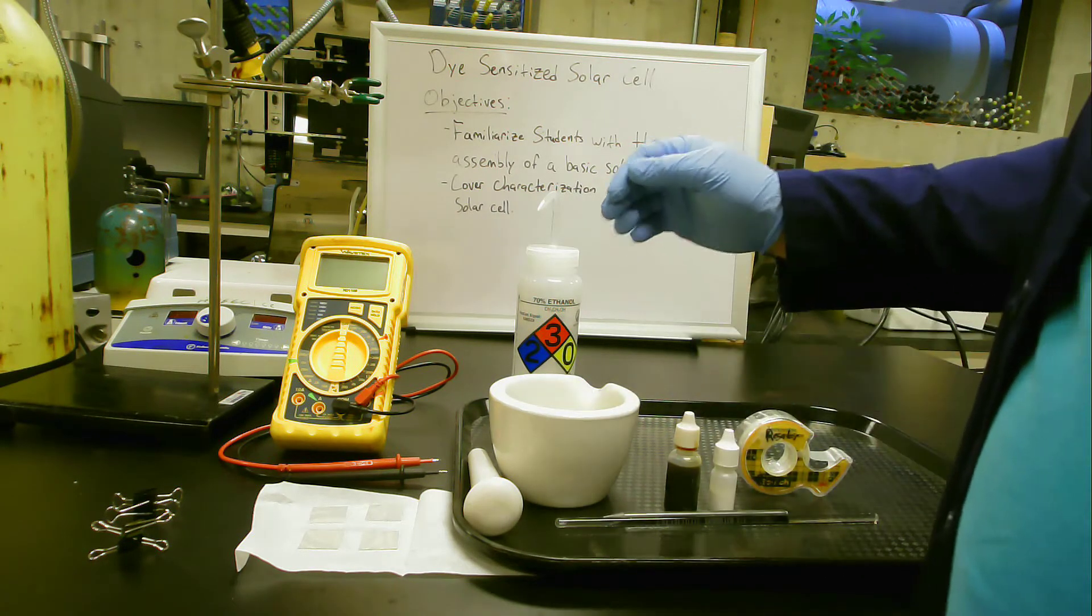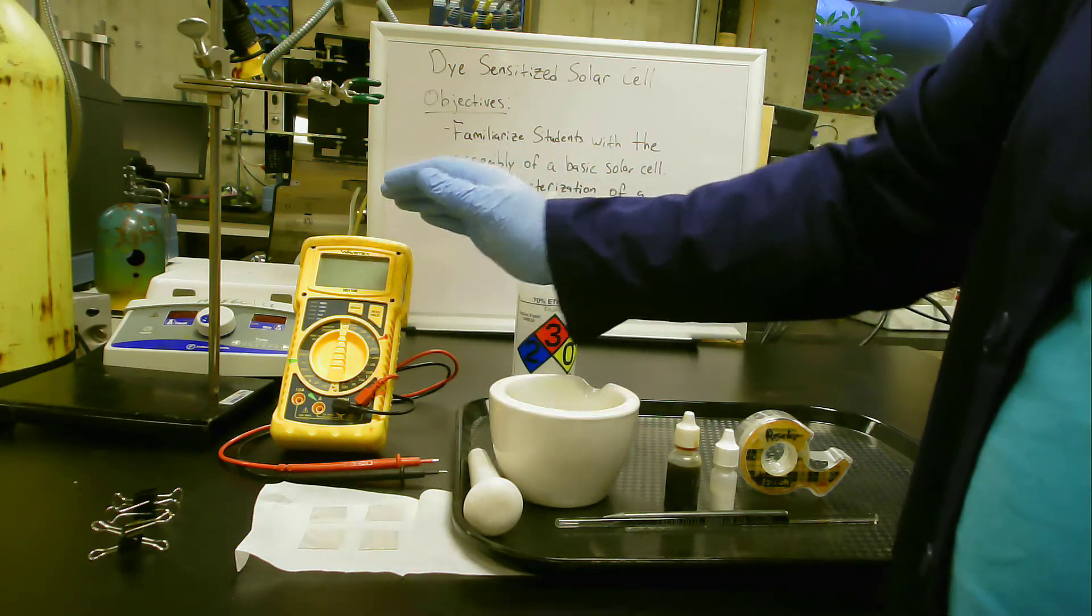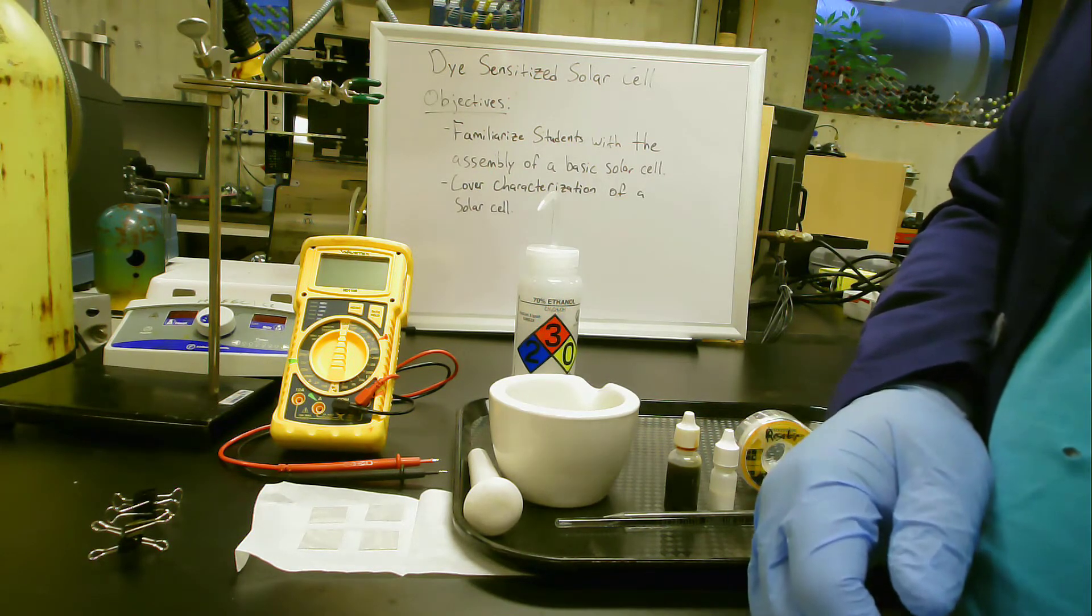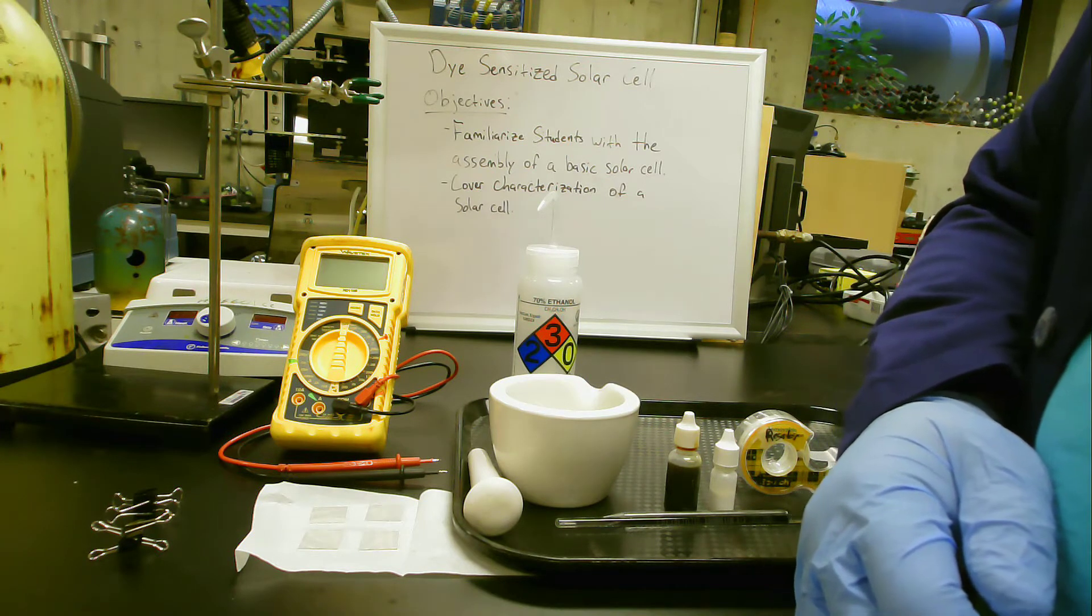We also have a multimeter. The multimeter will allow us to measure the resistance of the surface of the coated glass, which will allow us to identify which side is conductive, because both sides of the glass are not conductive—only one is.